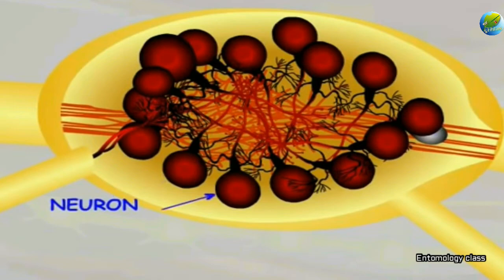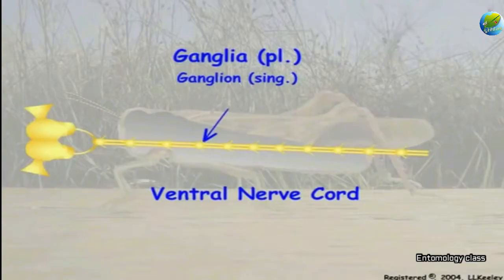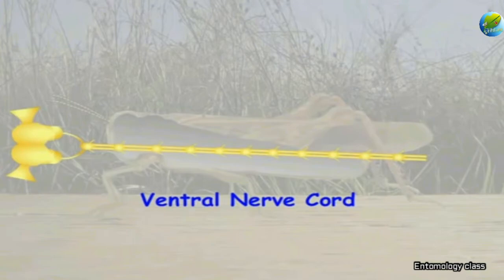Ganglia are simply accumulations of neurons for various functions. Ganglia within each segment are linked to one another by a short medial nerve called a commissure, and are also joined by intersegmental connectives to ganglia in adjacent body segments. In general, the central nervous system is rather ladder-like in appearance.